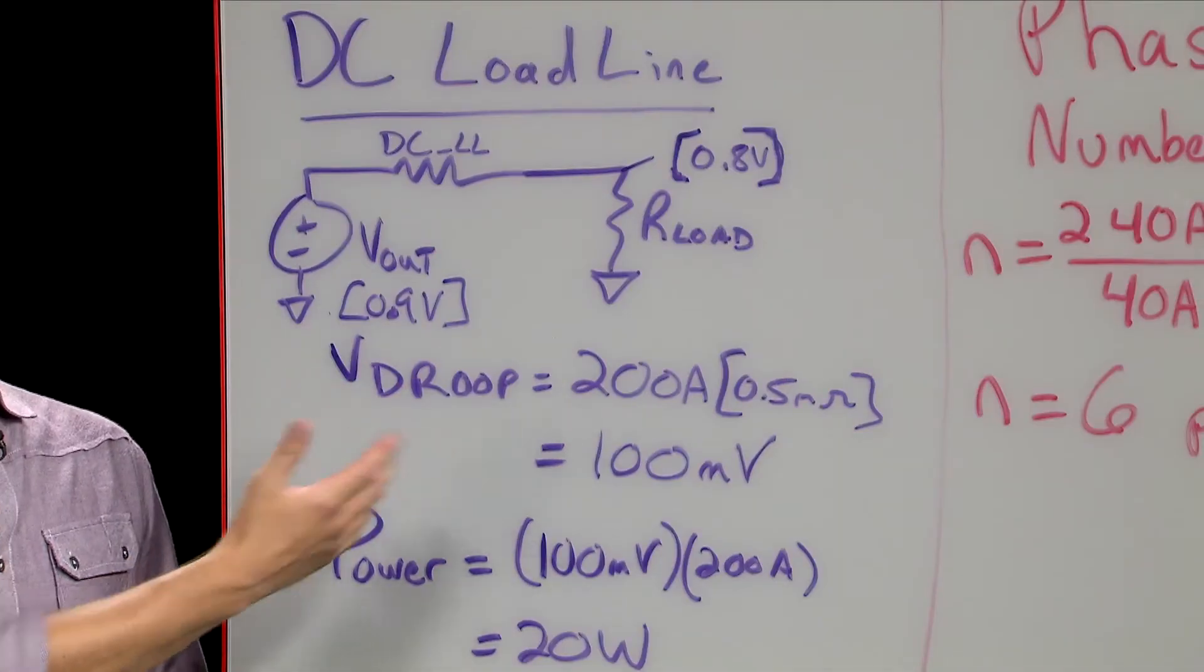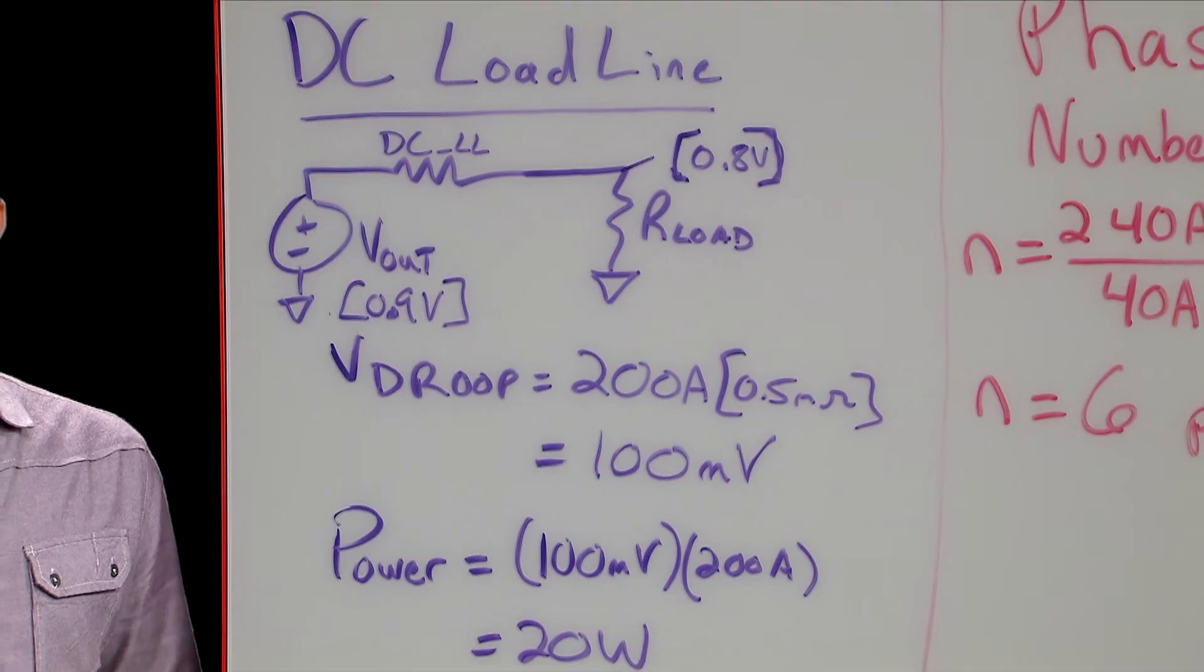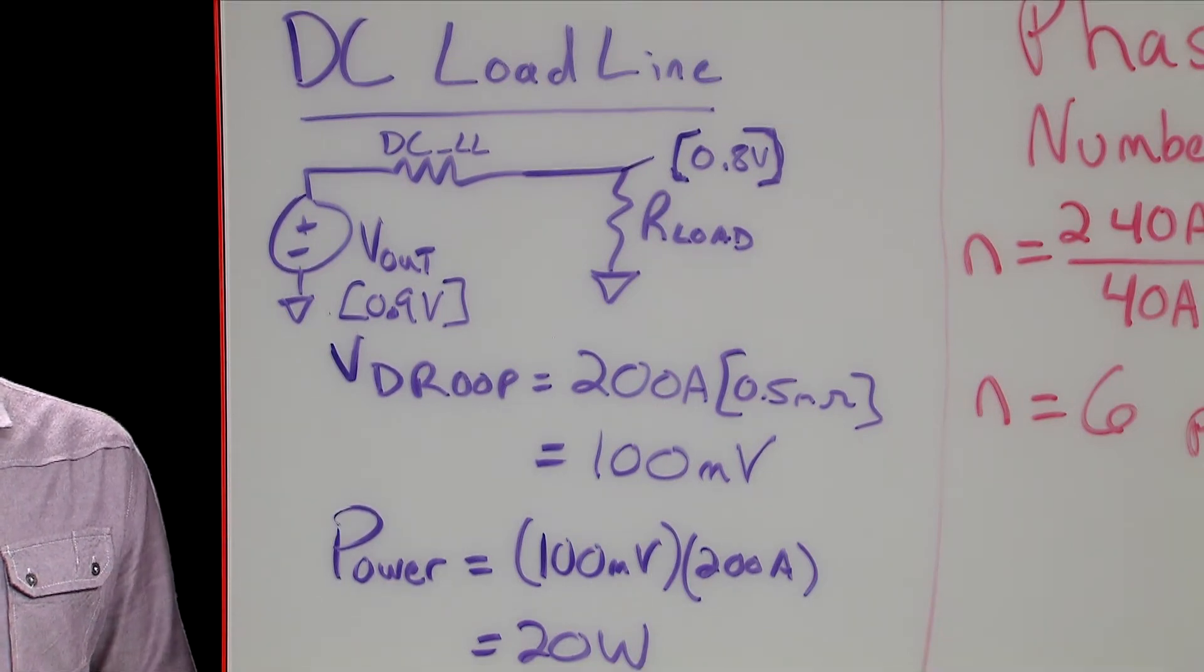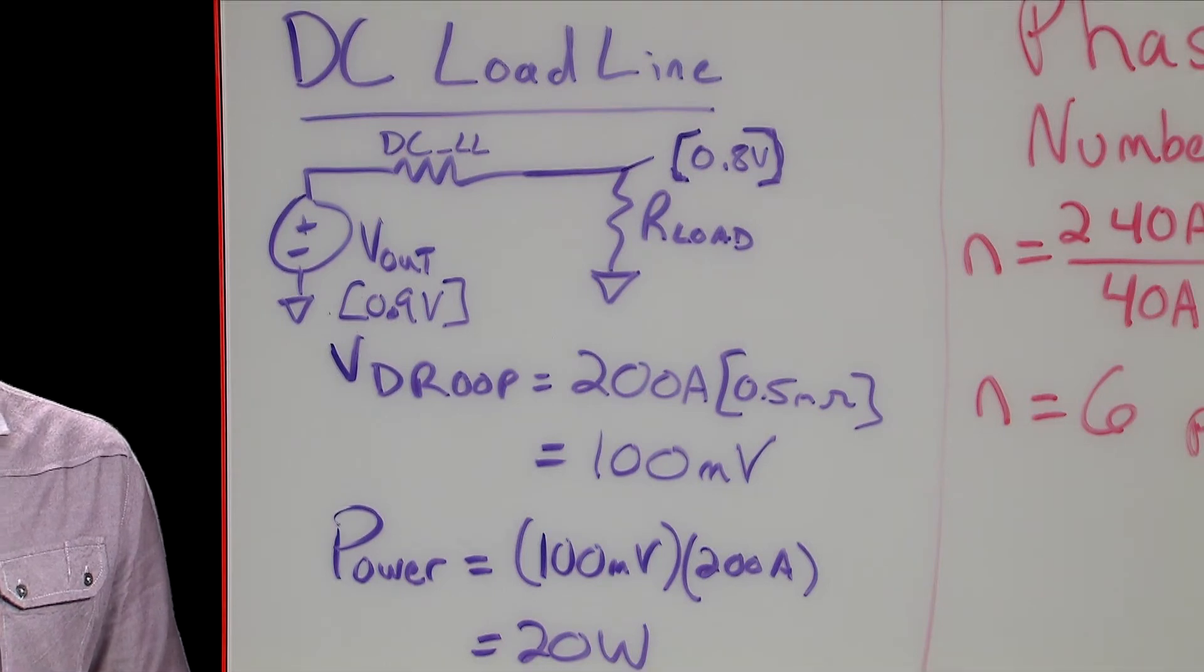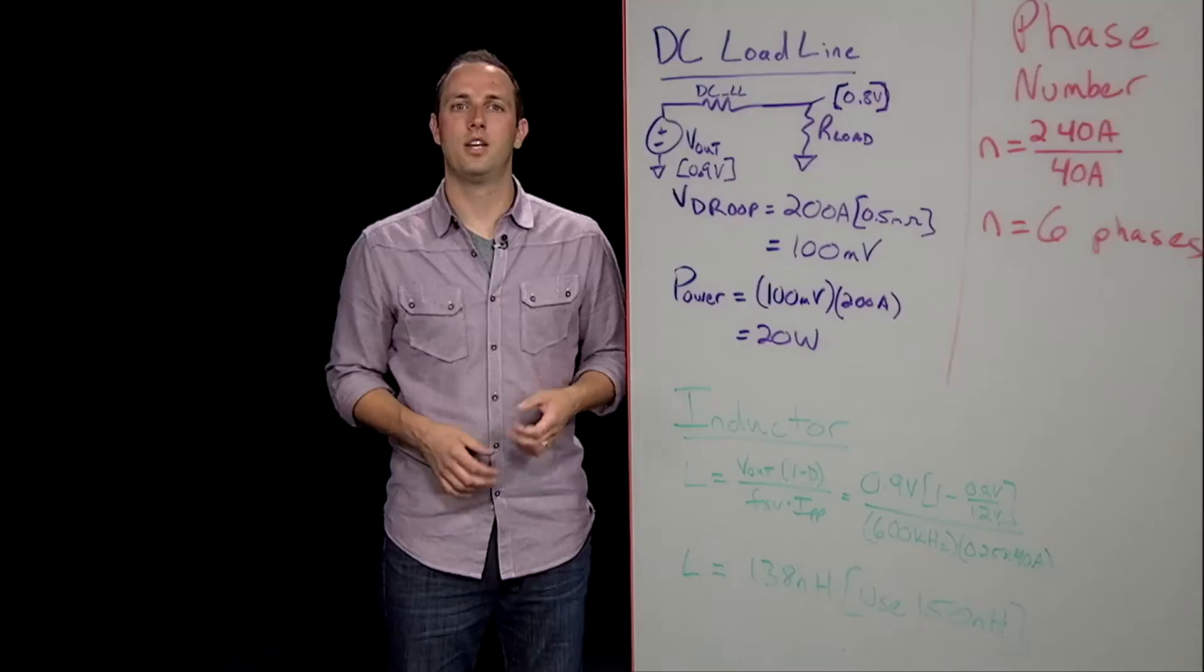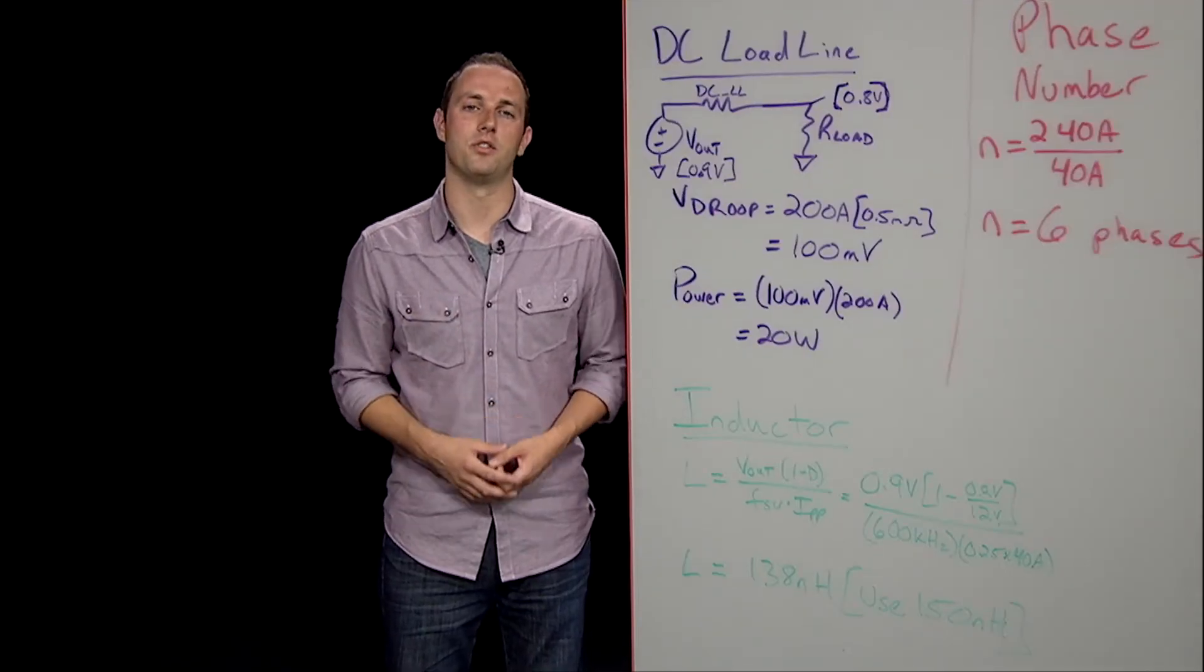With the DC load line, a buck regulator will essentially look like a fixed resistor voltage divider with whatever might be on its load and act accordingly. For our design, with a 200 amp load, the 0.9 volt nominal output voltage will drop by 100 millivolts to 0.8 volts at the output node. When the load current decreases, the output voltage will increase appropriately. This function serves two purposes that benefit us as designers.